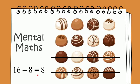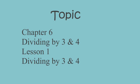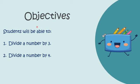So I can say that 16 minus 8 is equal to 8. Our today's topic is Chapter 6: Dividing by Three and Four, Lesson 1: Dividing by Three and Four. The objectives are: at the end of today's lesson, students will be able to divide a number by three and divide a number by four.